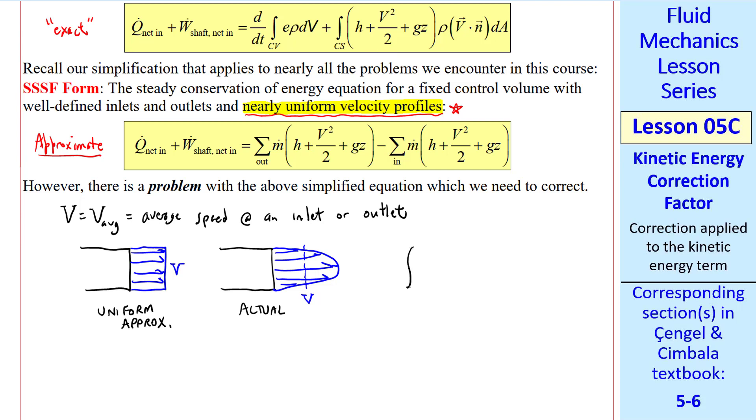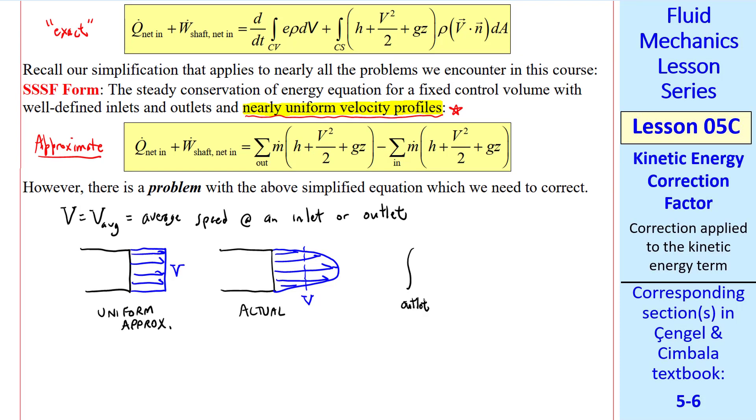Let's look at that term by itself, where we integrate over this outlet. The 1 over 2, or 1 half, can come outside the integral. So we have our v² term, times ρ, which I'll also put outside since we're assuming incompressible flow here, and then v·n dA.